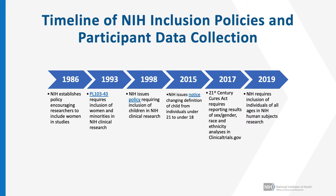Then in 2017, Congress passed the 21st Century Cures Act, which included a number of provisions that affected inclusion, including new requirements for reporting results of sex, gender, race, and ethnicity analyses in clinicaltrials.gov. And finally, in 2019, NIH now requires the inclusion of individuals of all ages in NIH human subjects research.